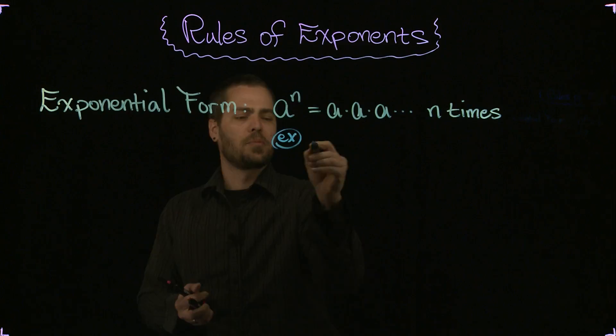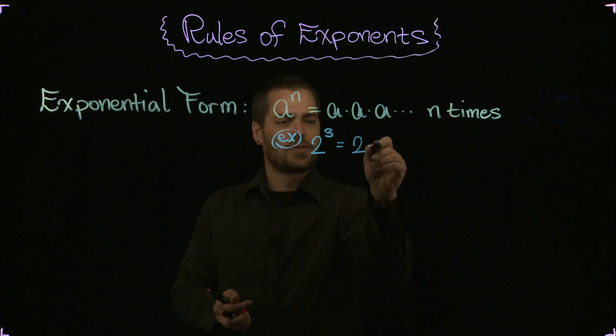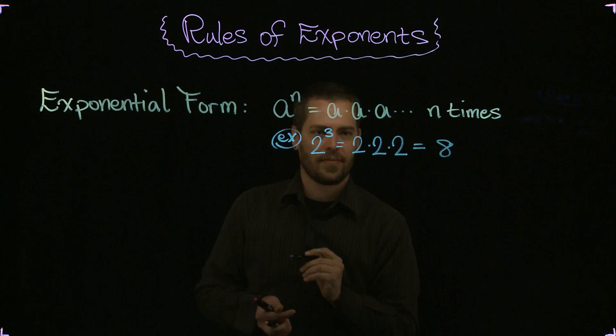Just as a quick numbered example to illustrate that, suppose I had 2 to the third power. Then what that really means is 2 times 2 times 2, which gives us 8.